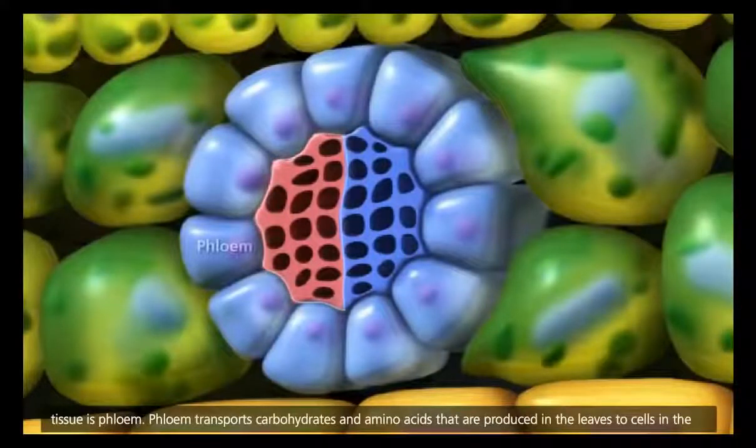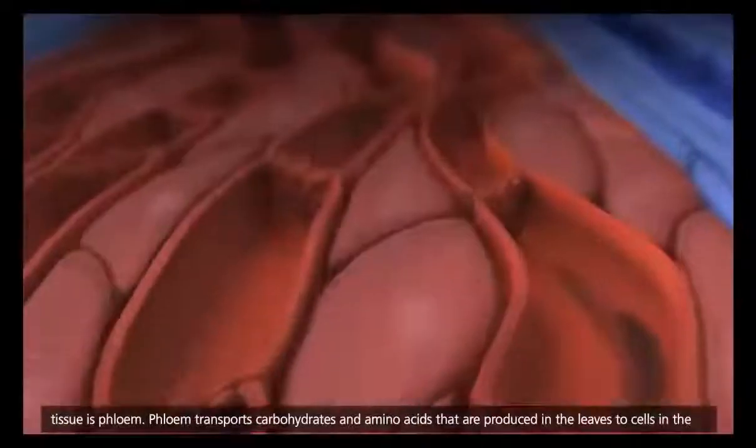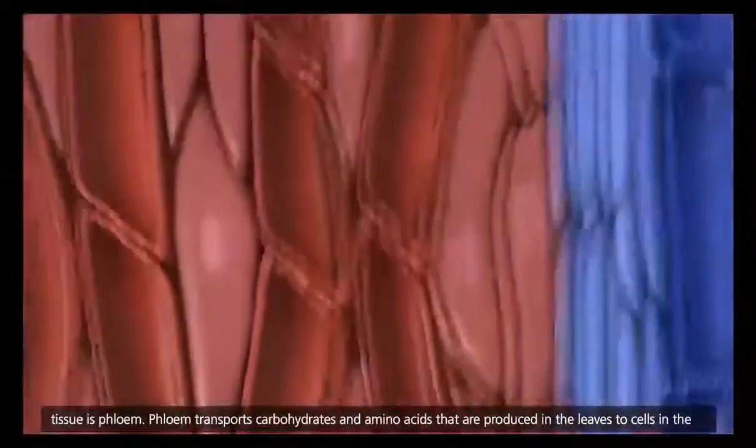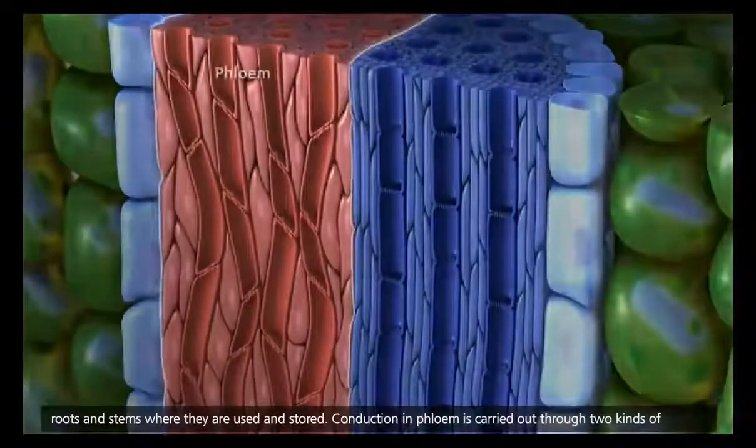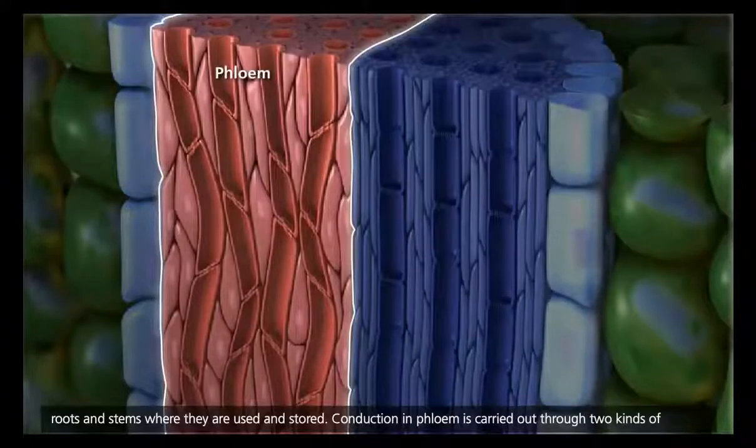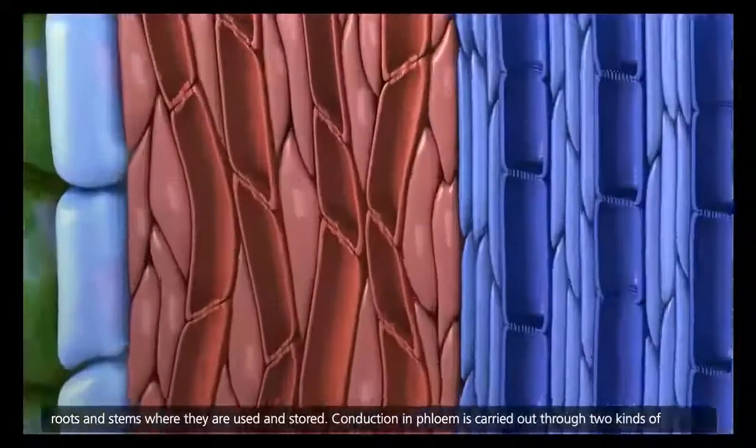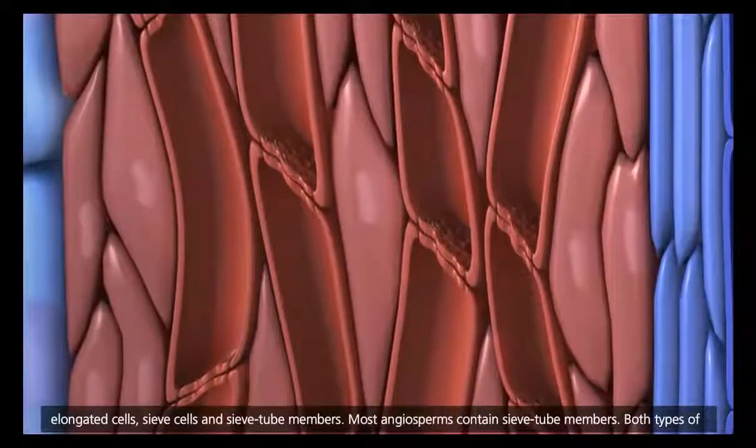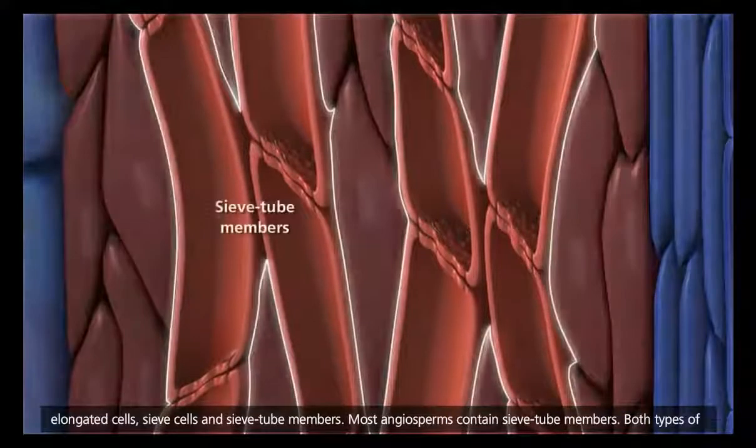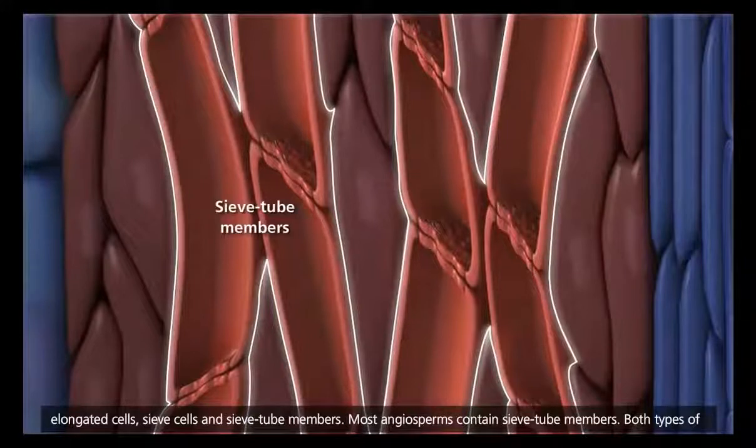The other main vascular tissue is phloem. Phloem transports carbohydrates and amino acids that are produced in the leaves to cells in the roots and stems where they are used and stored. Conduction in phloem is carried out through two kinds of elongated cells, sieve cells and sieve tube members. Most angiosperms contain sieve tube members.